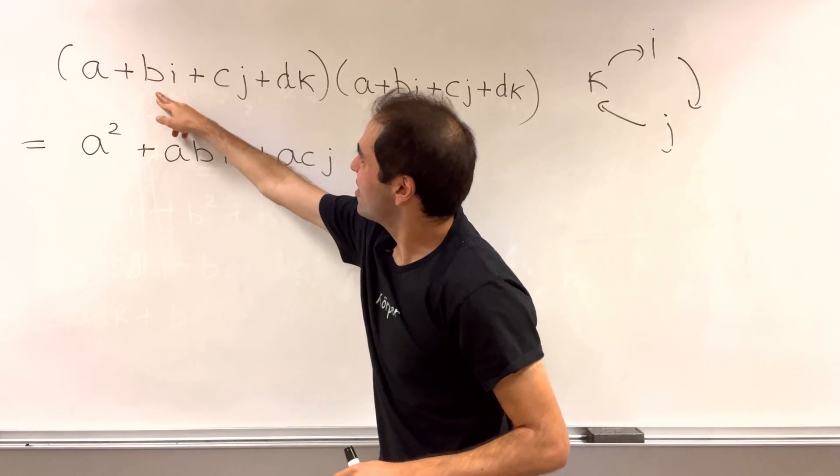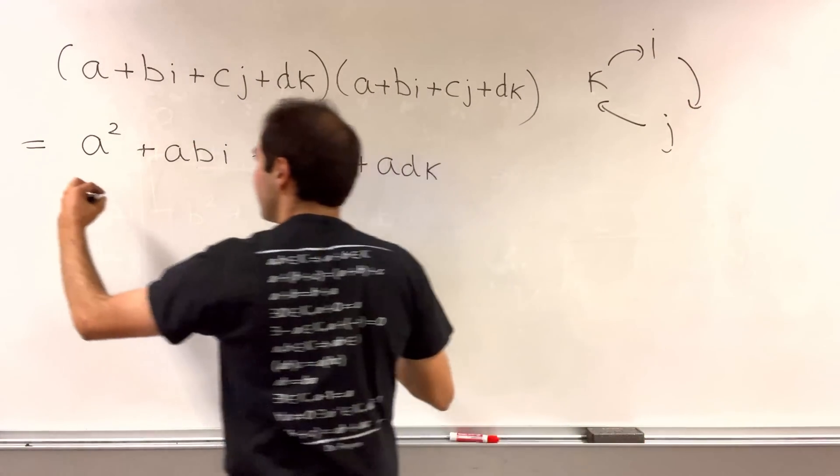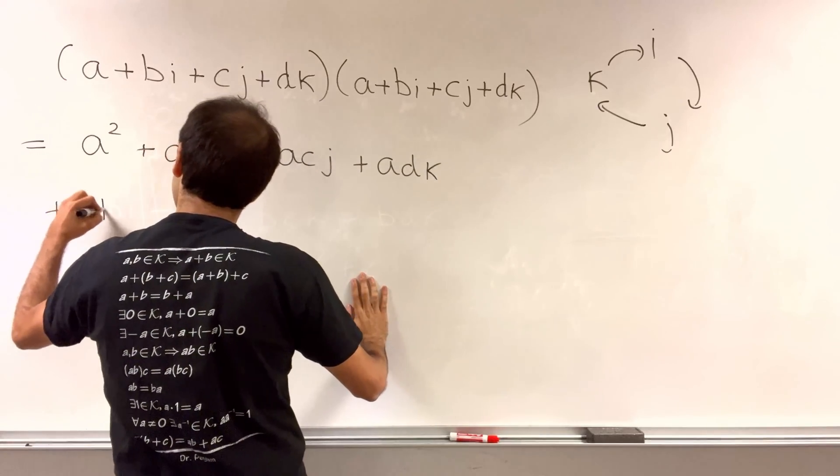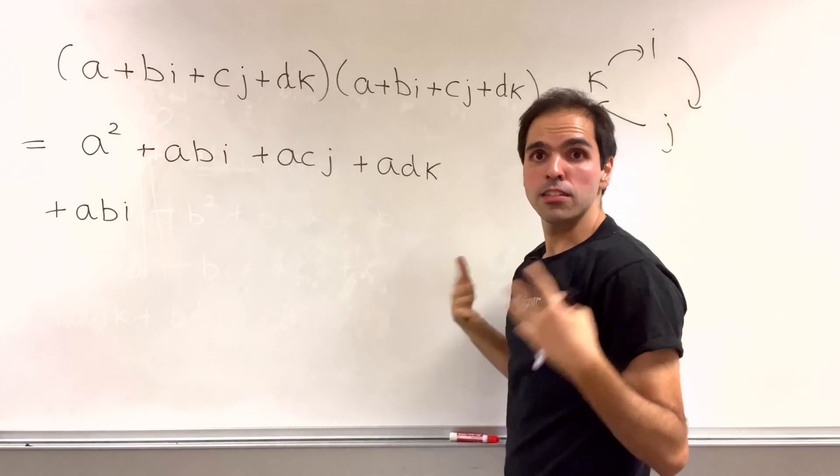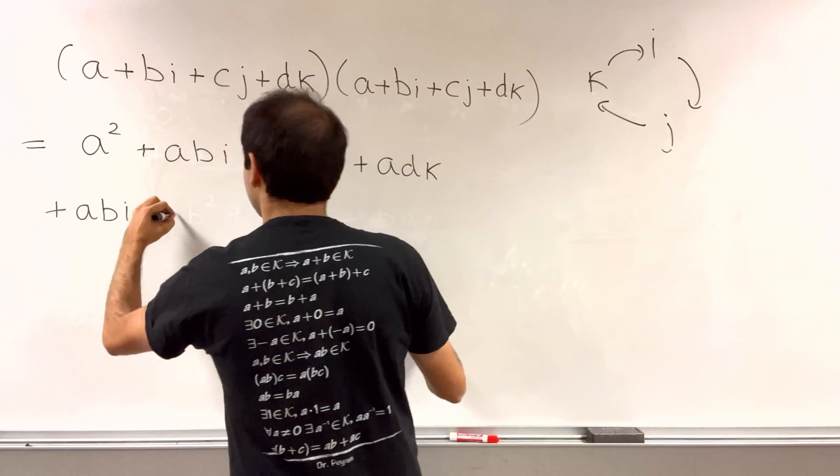Now the second line, a little bit harder. So bi times a, that's abi. Now bi times bi, that's b squared i squared, which is minus b squared.